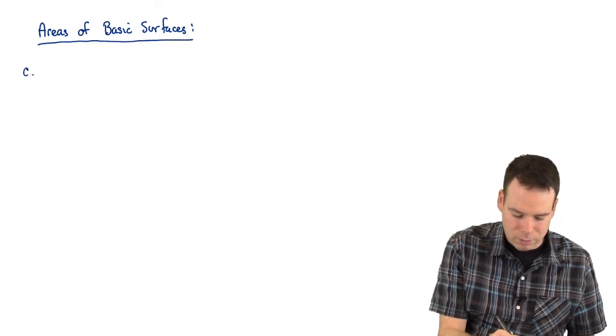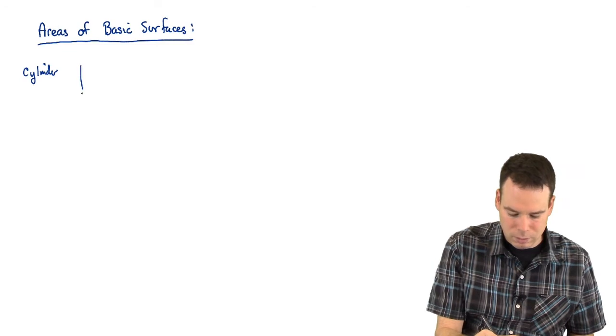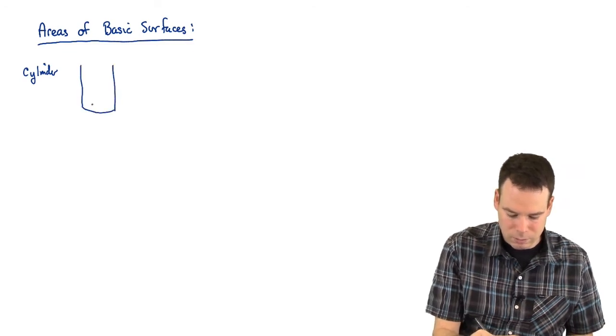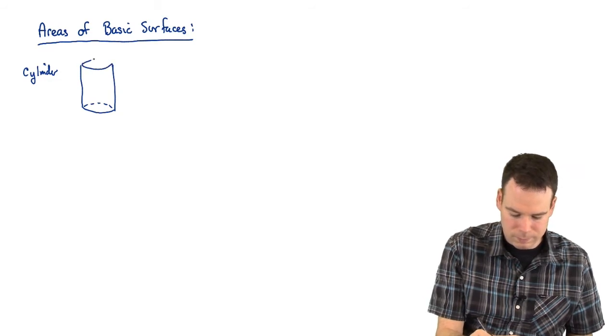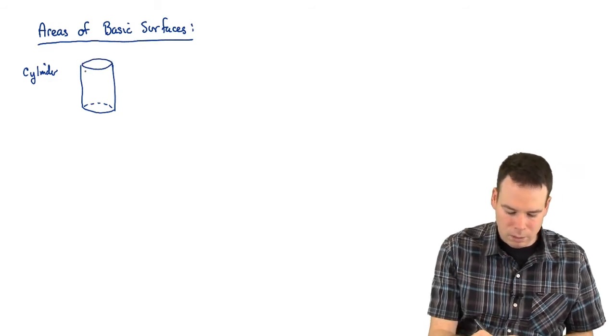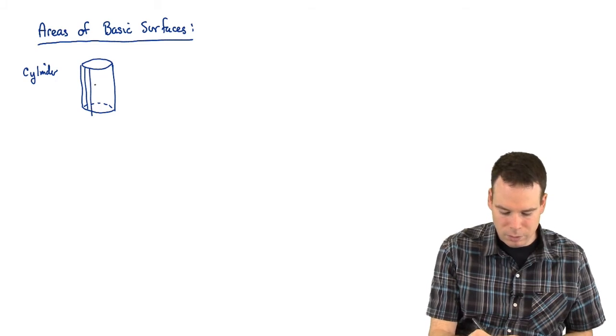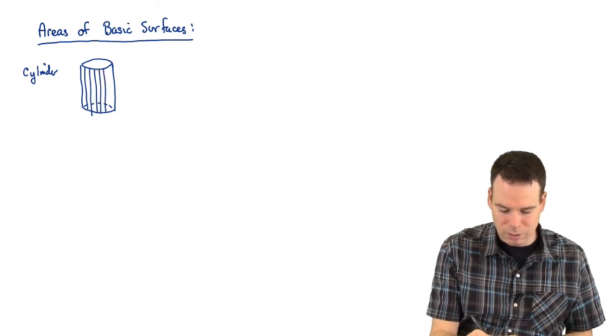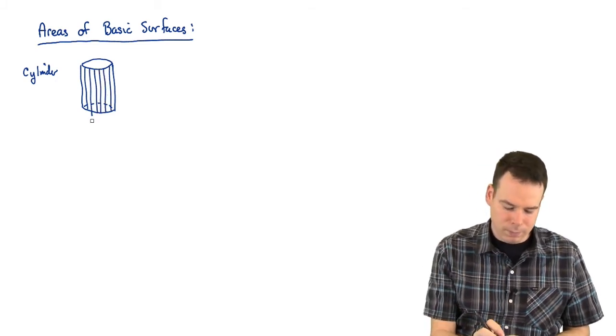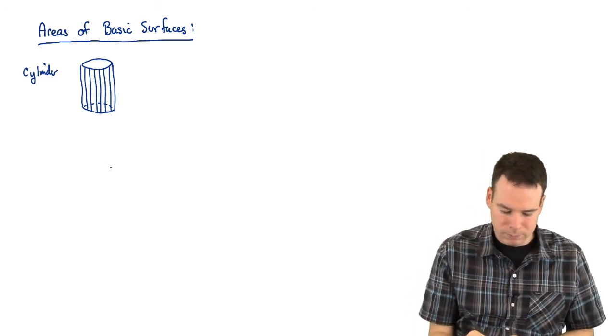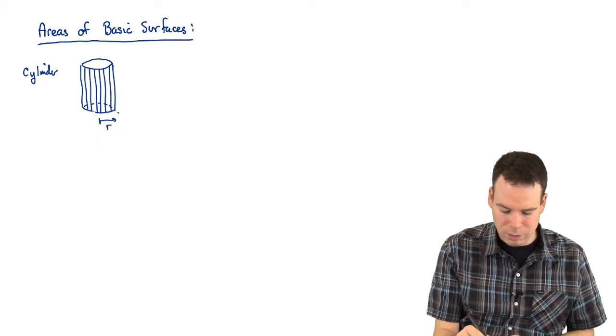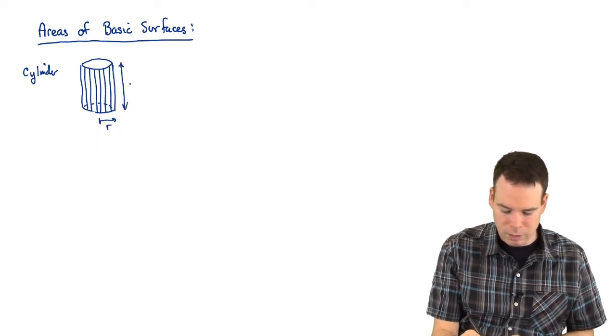There's the cylinder. Looks like this. And in all these cases if there's an open end we're not imagining there's a disk on the end. We're just interested in the lateral surface area, the sides. So there's our cylinder, maybe base radius R and height L.